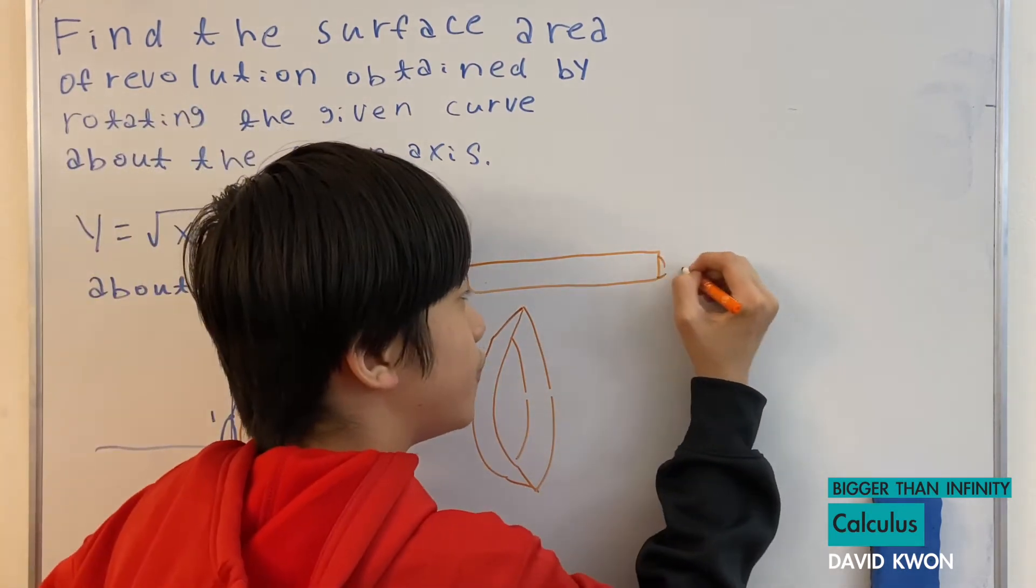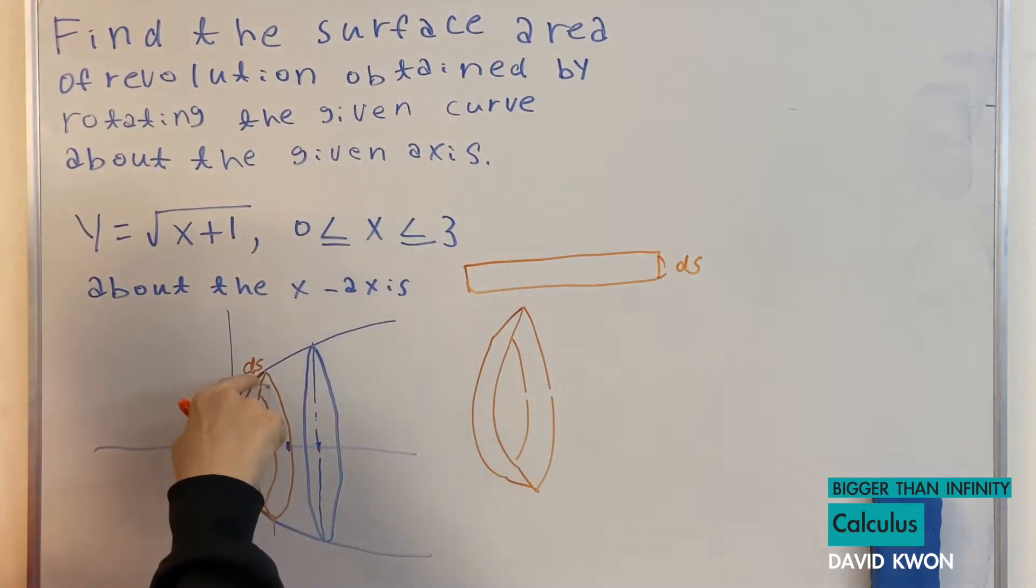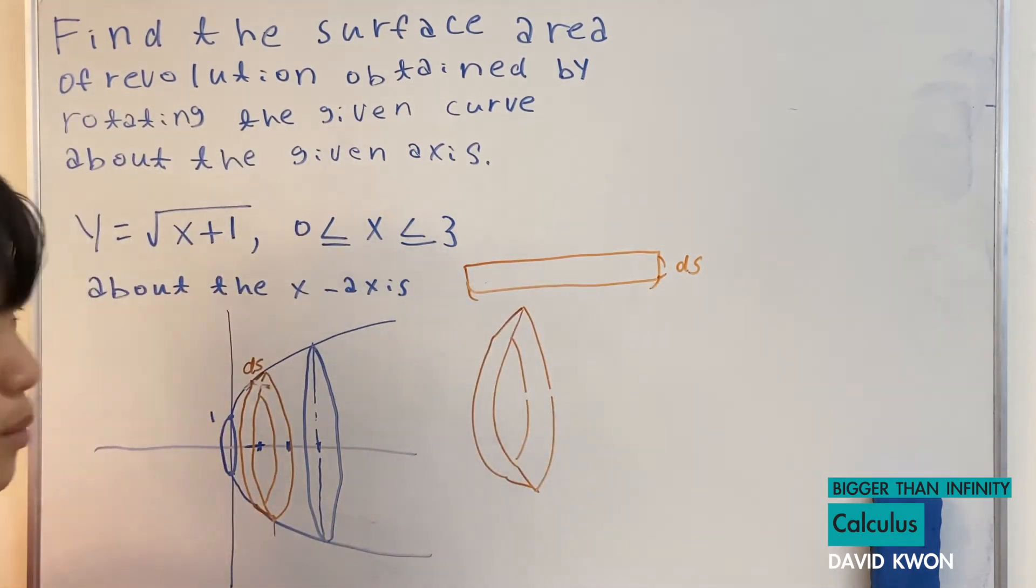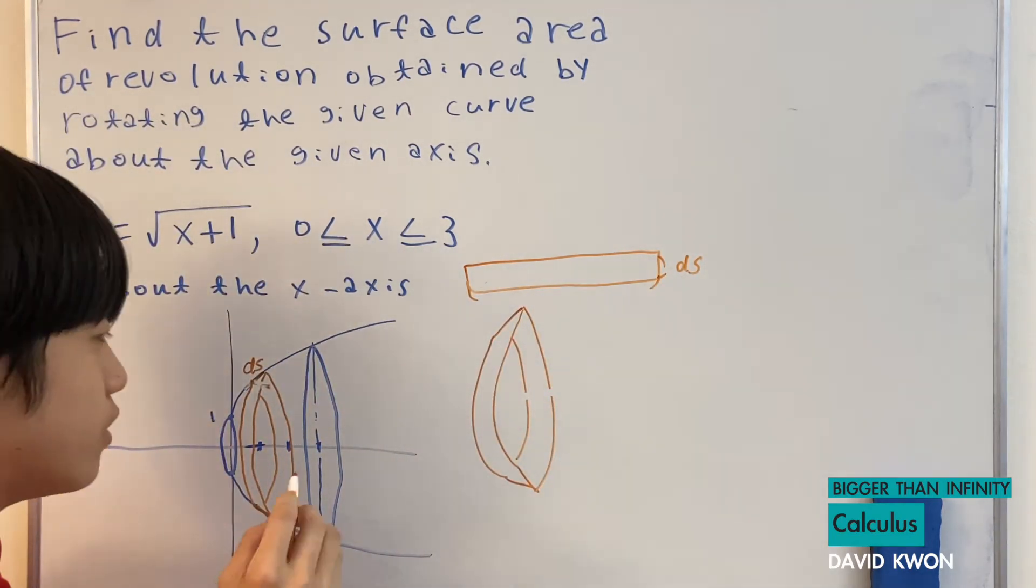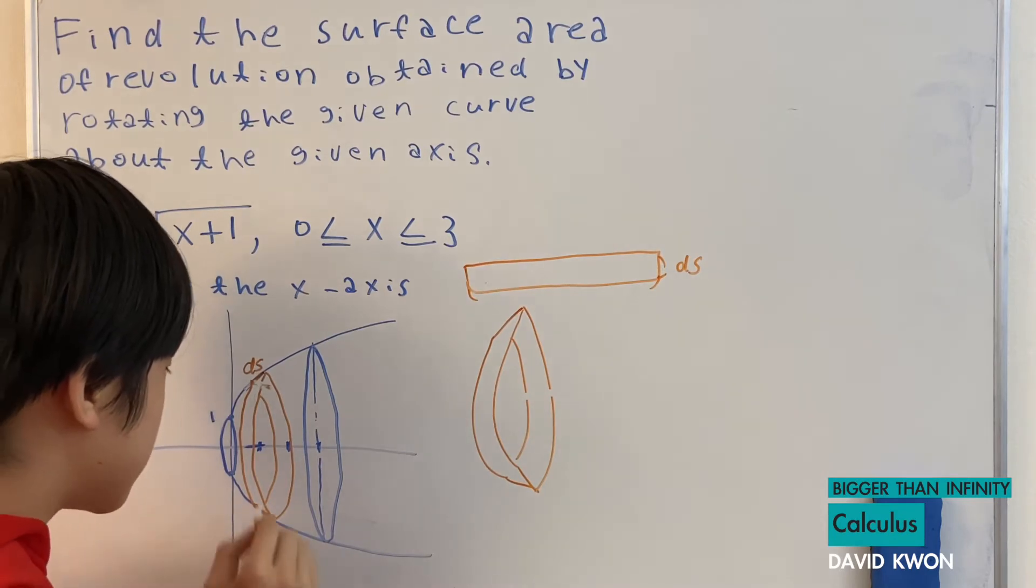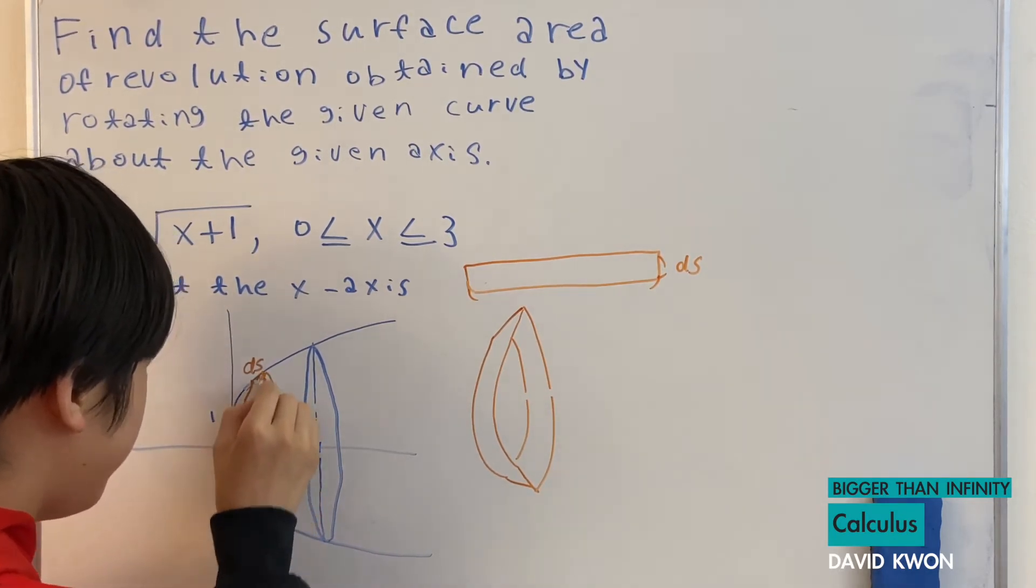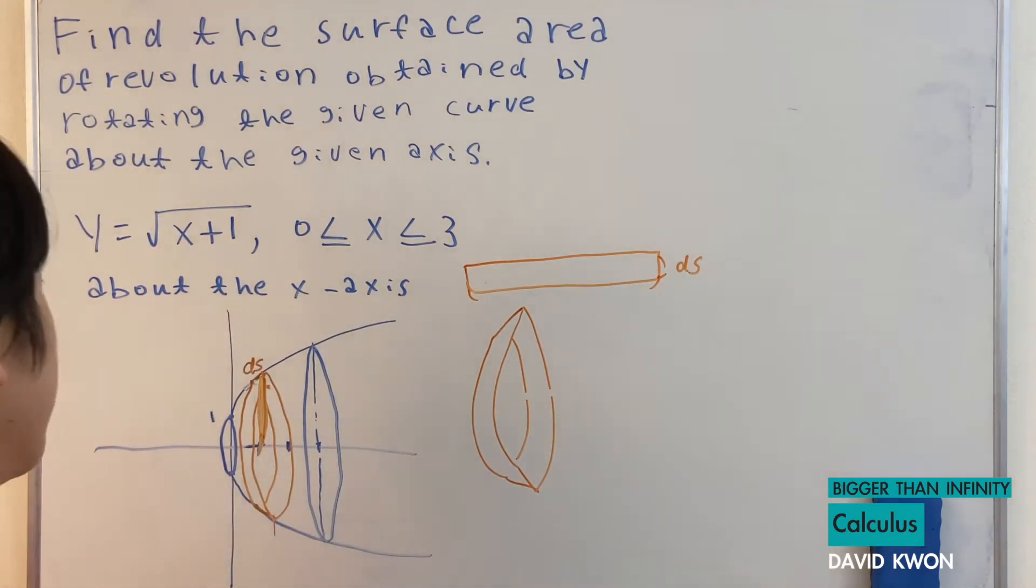And this thickness is ds, which is this right here. And this is a circumference we will find. And to do that, we need to know its radius. What's the radius? This is the radius. But do you know what this is? Y. But do you know also what y is? That is equal to square root of x plus 1.